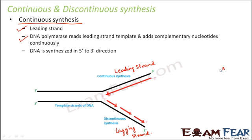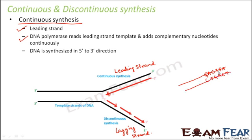For example, on the existing strand, as DNA polymerase moves along it reads the sequence of bases and creates their corresponding complementary bases on the new strand. The two strands are complementary to each other, forming a new copy of DNA.